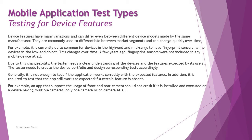Generally, it is not enough to test if the application works correctly with an expected feature. More importantly, it is required to test that the app still works as expected if a certain feature is absent. For example, you may have created an app that interacts with a camera, but what if the device doesn't have a front camera, or only has a rear camera but not a dual, triple, or quad camera? Does your app still behave the same and remain usable for the user?